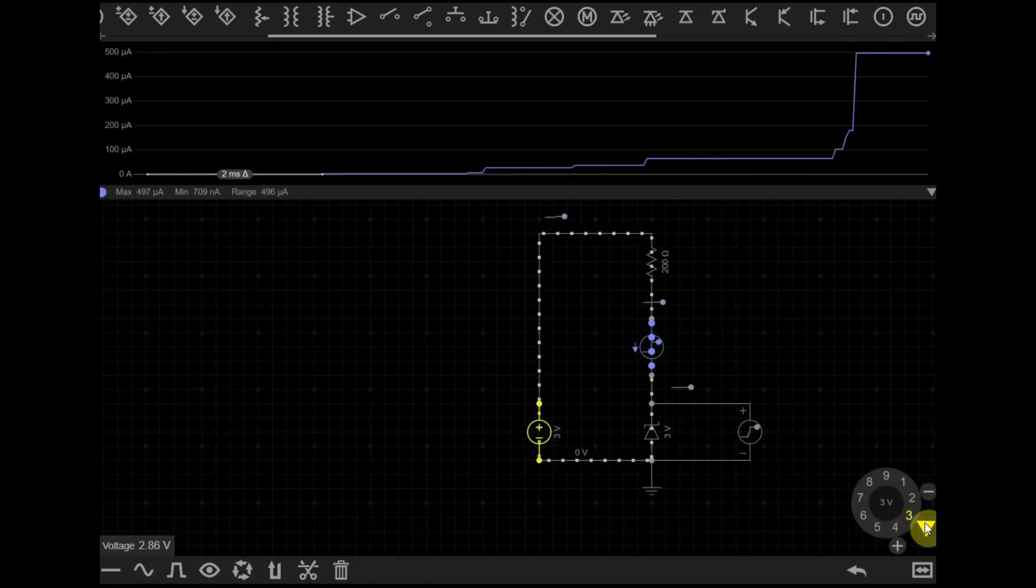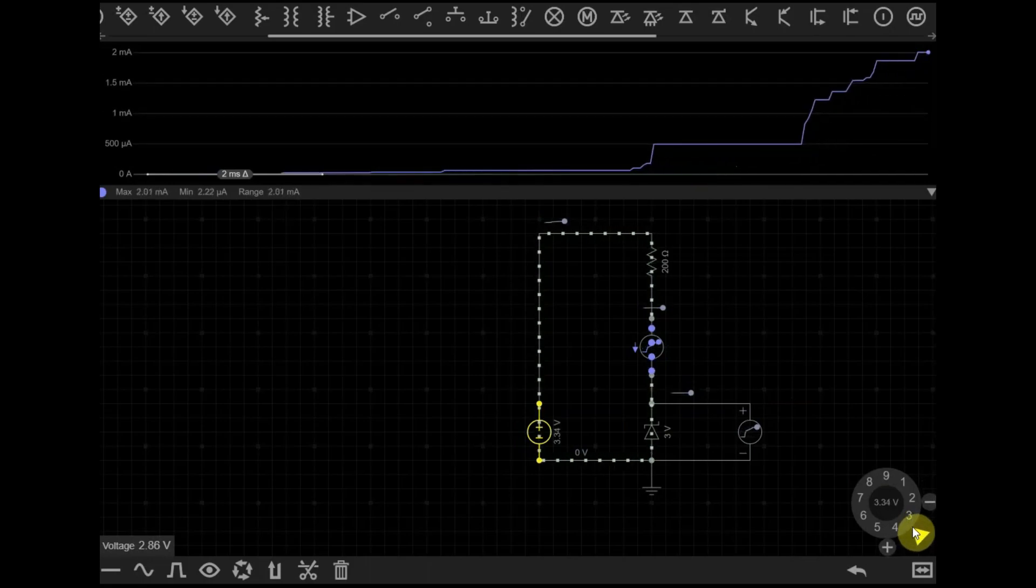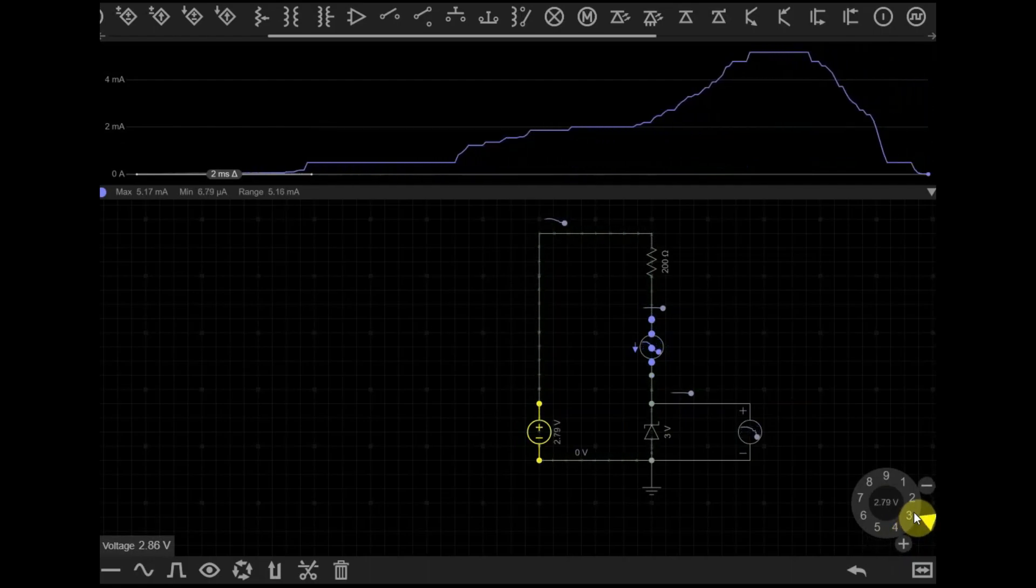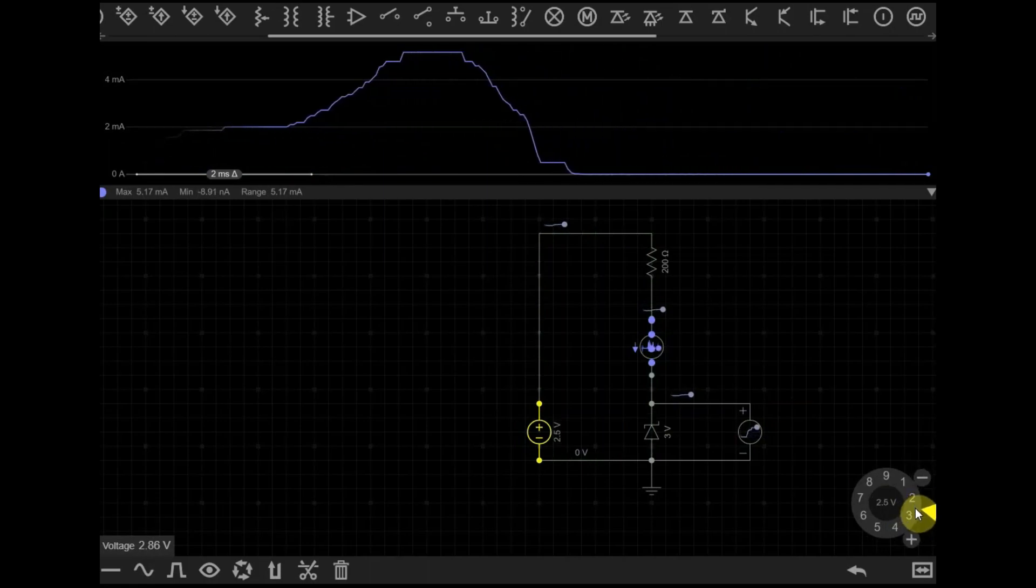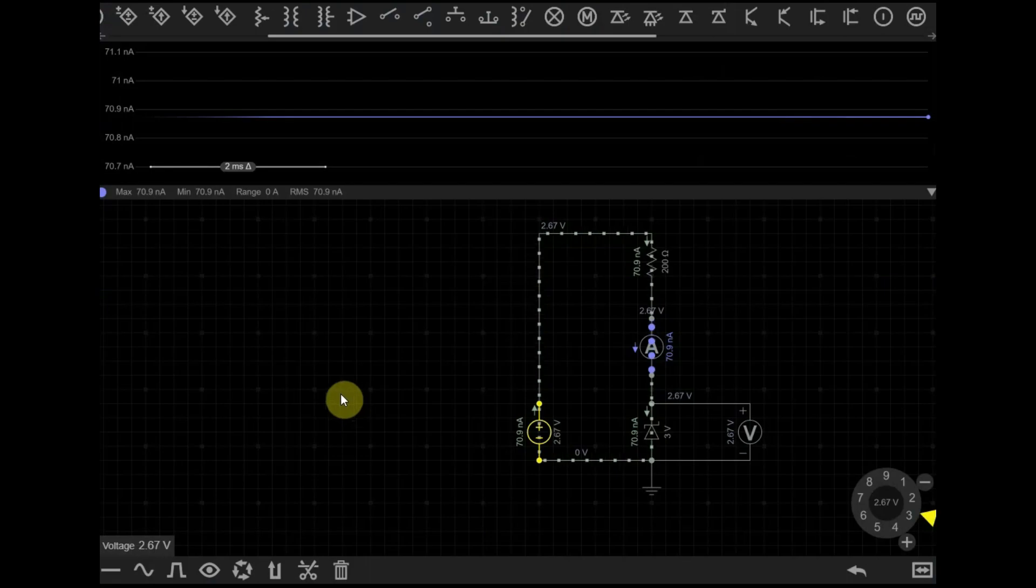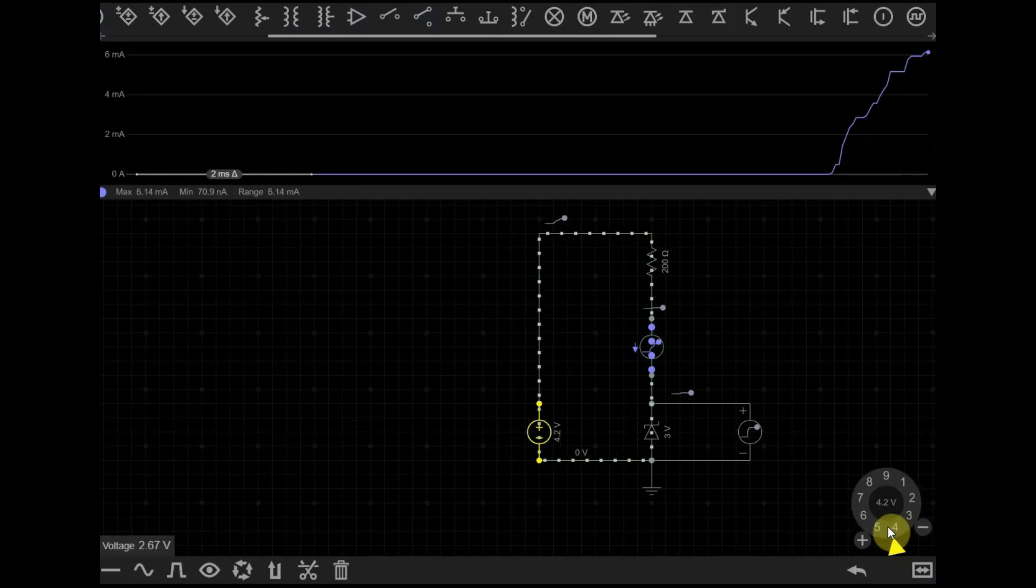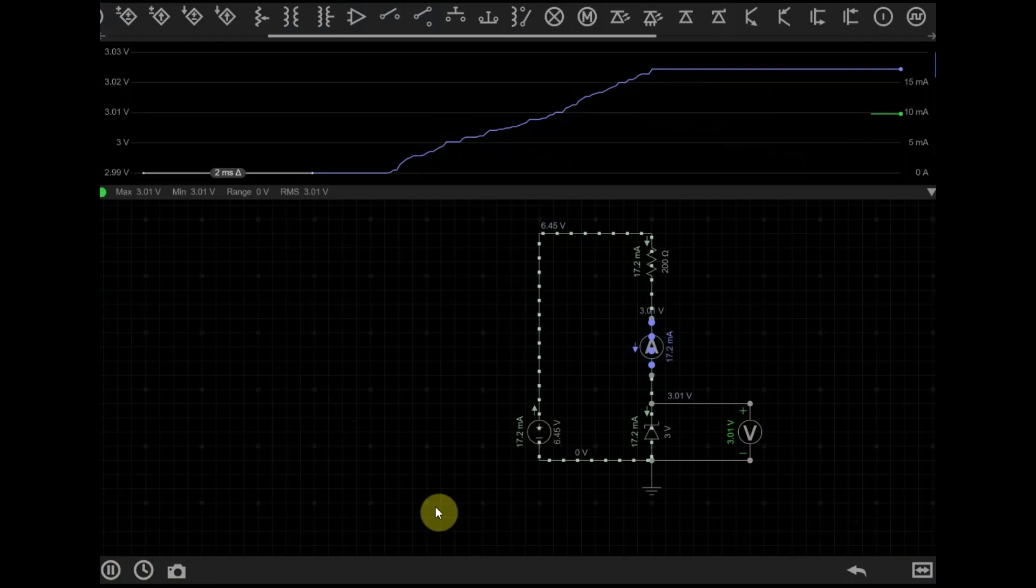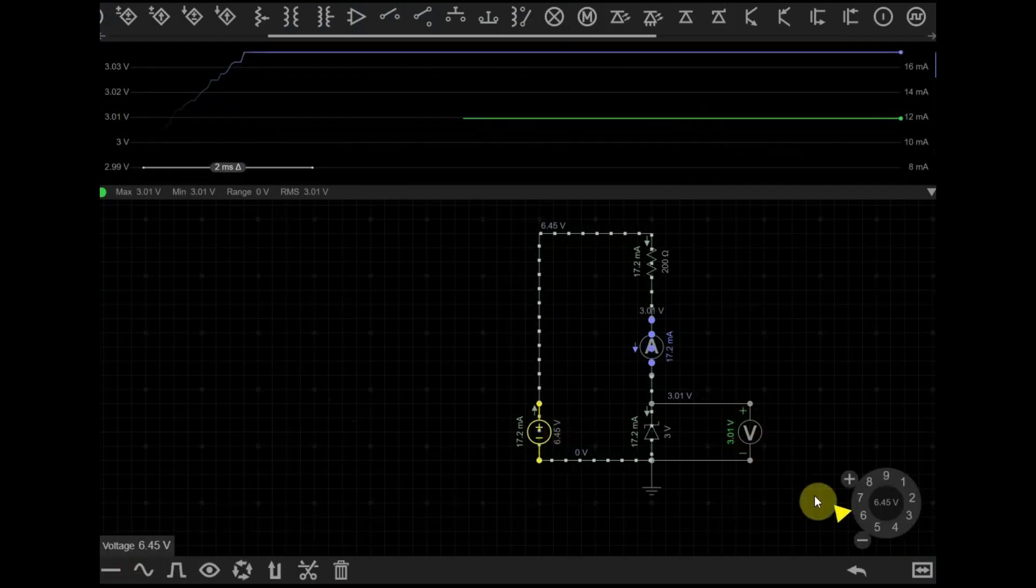Zener diodes are mainly designed to work in reverse bias as the voltage across the diode remains constant and equal to the Zener voltage. Even if the voltage across the Zener diode continues to increase beyond its Zener voltage, and consequently the current through the diode also continue to increase rapidly. This is because the Zener diode acts as a voltage regulator maintaining a nearly constant voltage across its terminals regardless of changes in the input voltage or the load current.